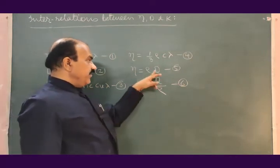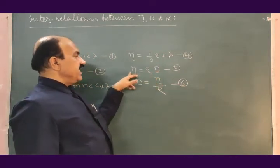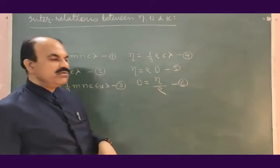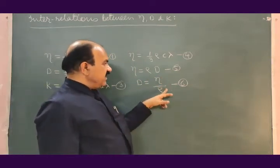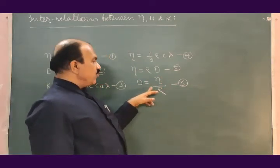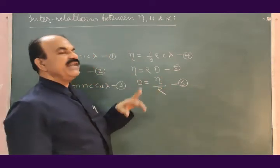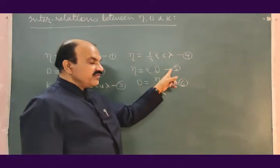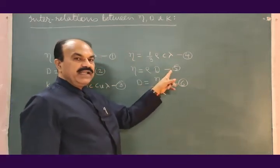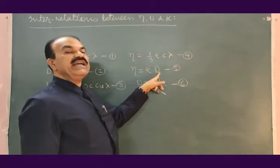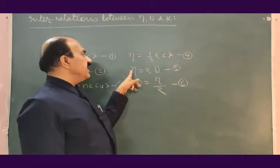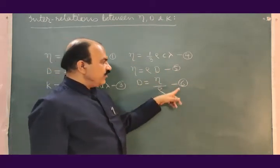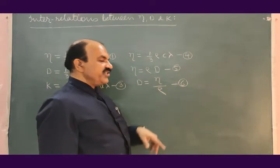If D and rho are known, eta can be found. If eta and rho are known, D can be found. From equation 5, if rho and D are known, eta can be found; from equation 6, if eta and rho are known, D can be found.